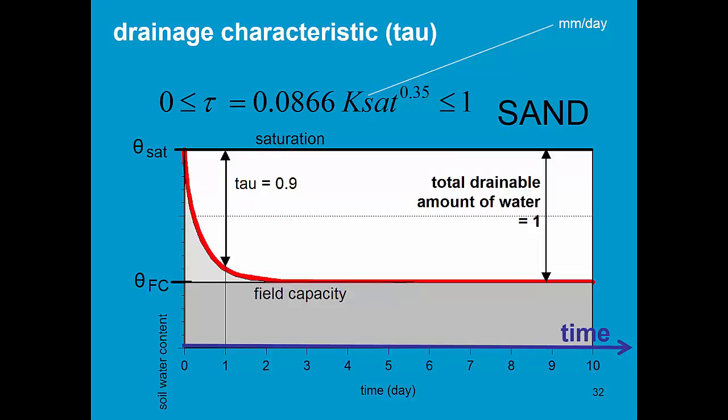In sandy soils with a high Ksat value, tau will be large as well. In this example, 0.9, it means that 90% of all the water has drained on day one.